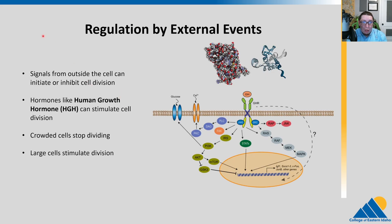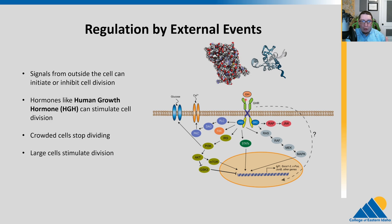The cell cycle is regulated by external events — signals from outside the cell that will either initiate or inhibit cell division. This is really important because we need cell division to happen at the proper time in the proper place. This could be external signals like human growth hormone that can stimulate cell division. Here is a growth hormone receptor, and when it receives growth hormone, lots of different things are activated that go on to affect different genes in the genome, leading to the cell cycle progressing.